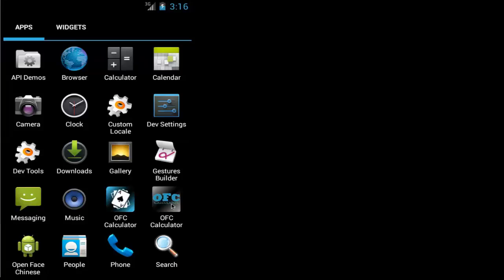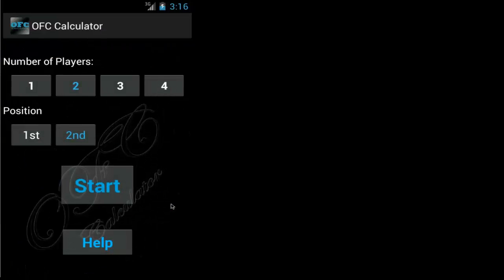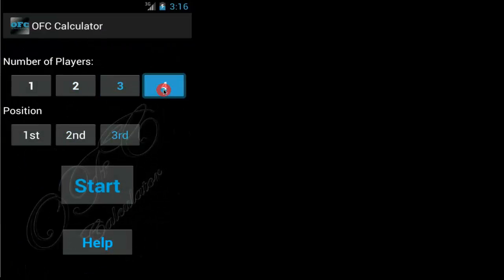We're going to start by opening the app from the application menu. This pulls up the main screen where you can select the number of players and your position. First position means you're first to act, second means second, and if you're in the same position as the number of players that means you're the dealer. For this tutorial we're going to choose two players and we're going to be first to act. Once you're done selecting the players and your position, press start.